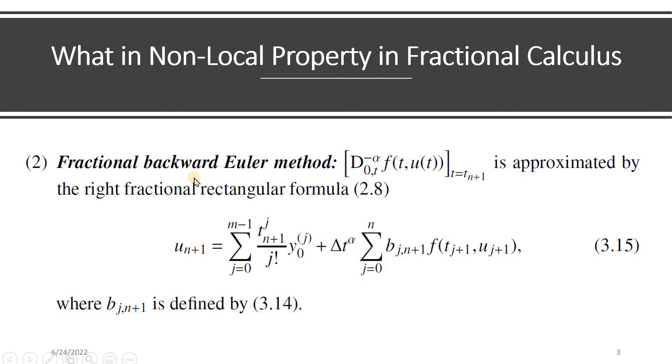If I move to the next slide, this is another method called fractional backward Euler's method. In this method, once again, you can notice that there is a summation notation at two different places. One is over here and another is over here.